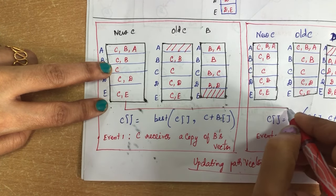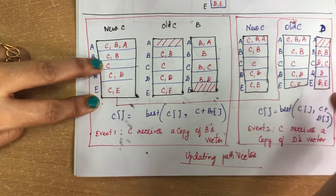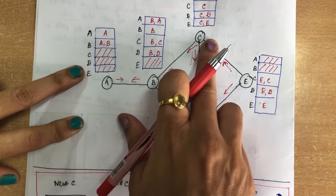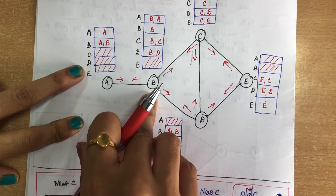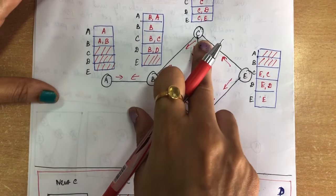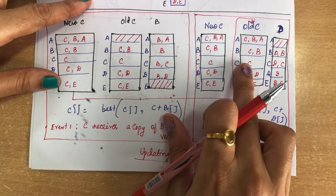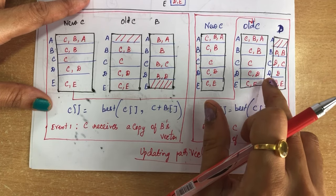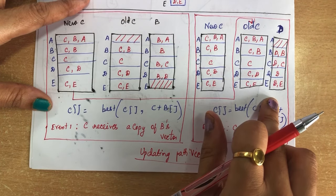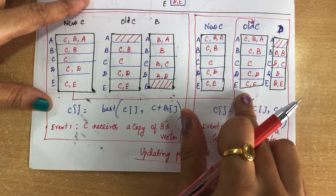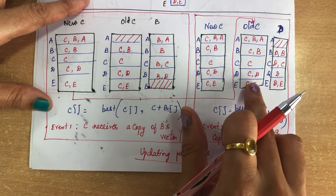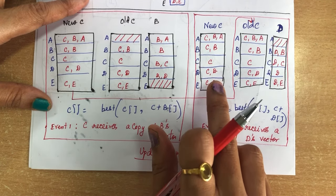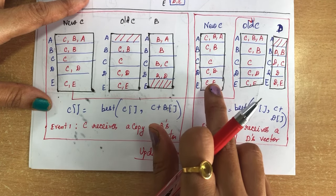Now this updated path vector becomes the old one. C is now also receiving the path vector from D. The old path vector at this stage is C, B, A — C, B — C — C, D — C, E. Since all entries have already been made in old C's path vector, we write them as they are when receiving D's path vector. So this is the new path vector for C, and this is how we implement path vector routing.